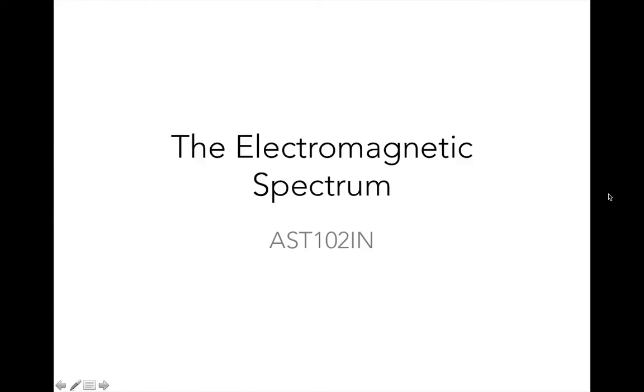Hi again everybody. Welcome to the 11th lecture for Astronomy 102 on the electromagnetic spectrum. In this lecture, we'll talk about all of the different flavors of light that astronomers capture and measure, and we'll also talk about how astronomers gather that light using telescopes.